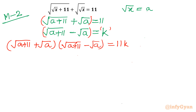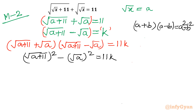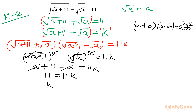Again we see the (a plus b)(a minus b) difference of squares form. Applying it: [square root of (a plus 11)]² minus [square root of a]² equals 11k. Expanding, square root and square cancel, giving a plus 11 minus a equals 11k. The a terms cancel, so 11 equals 11k, meaning k equals 1.